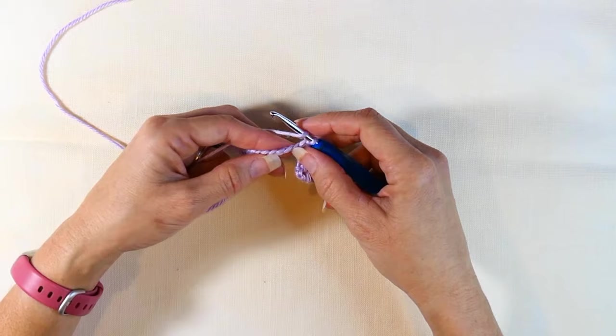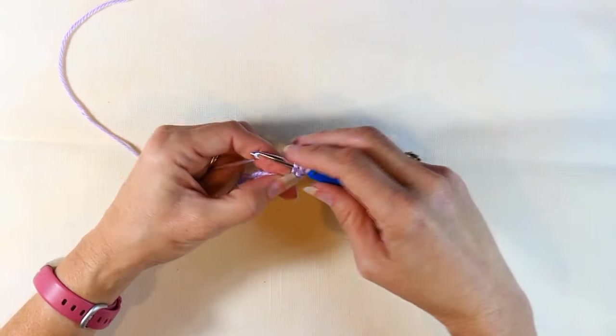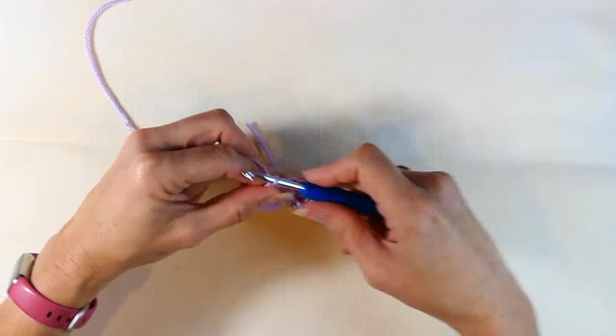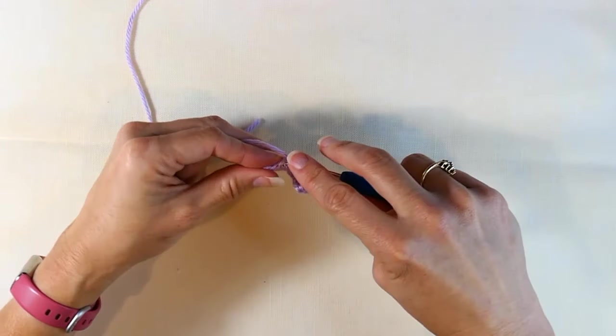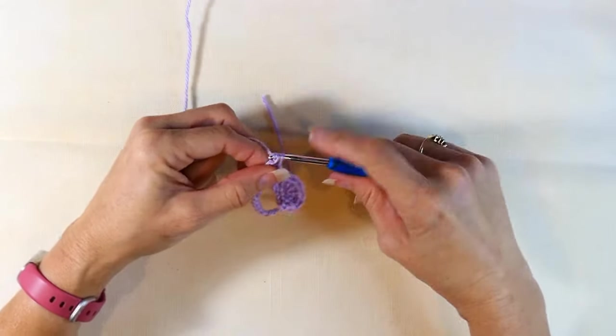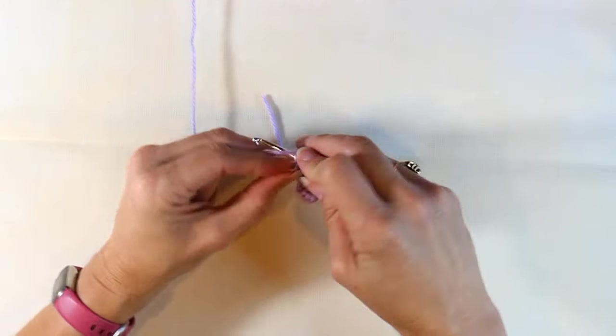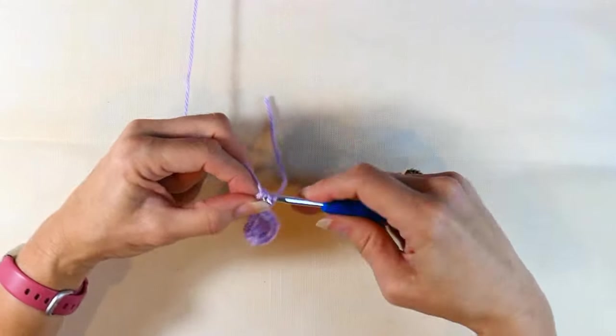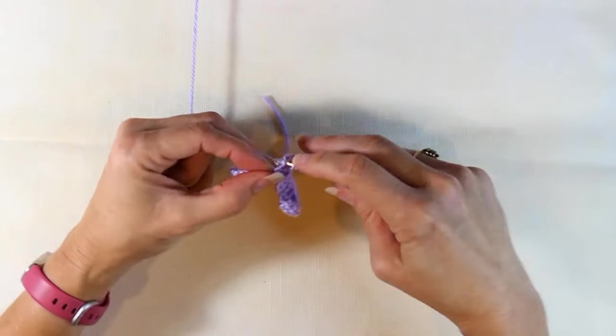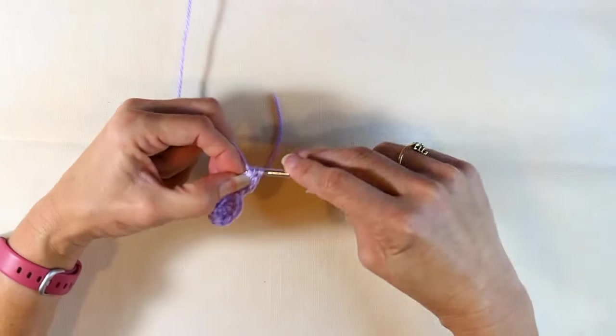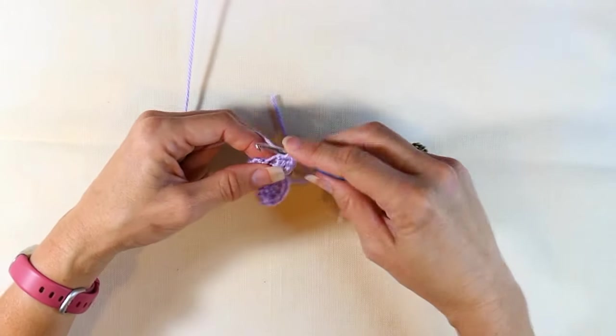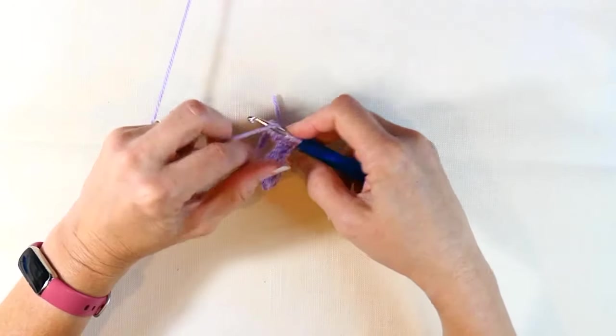Now you're going to skip 2, and do another 7 double crochets in that third chain from the hook. So again, you're just going to repeat what you've done, the 7 double crochets in that third chain from the hook. And after you're done with these, you're going to repeat, skipping 2, and then doing that slip stitch in the third from your hook. You're just going to repeat that pattern for as many as you like.